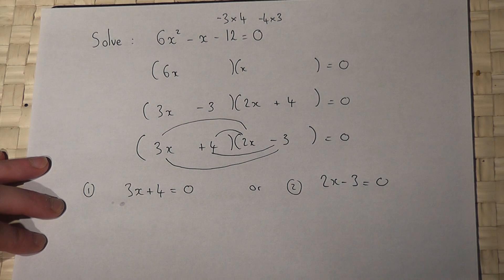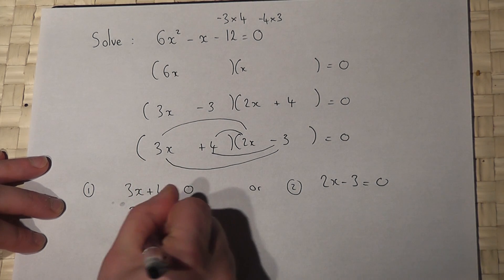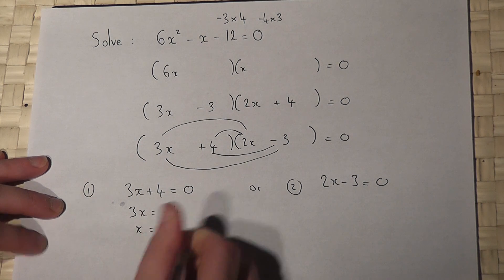So if I solve the first equation, 3x equals minus 4, so x equals minus 4 over 3.